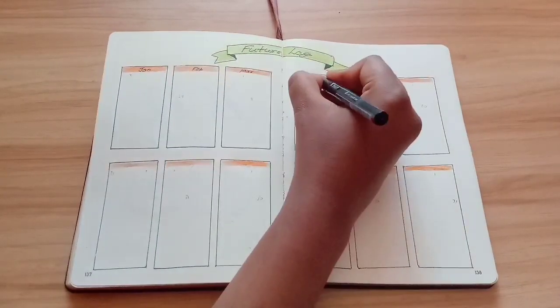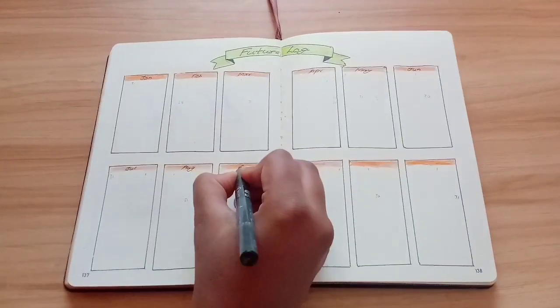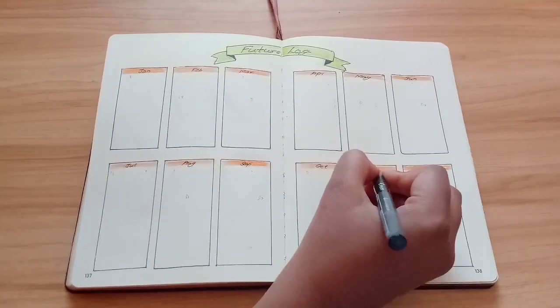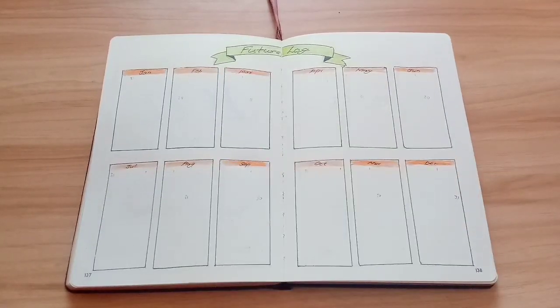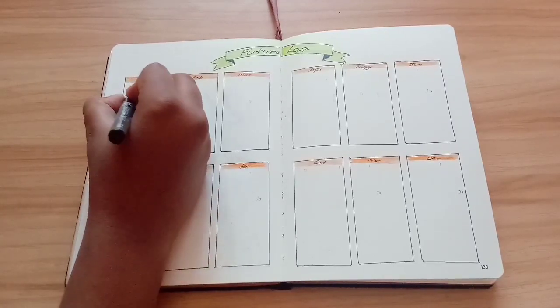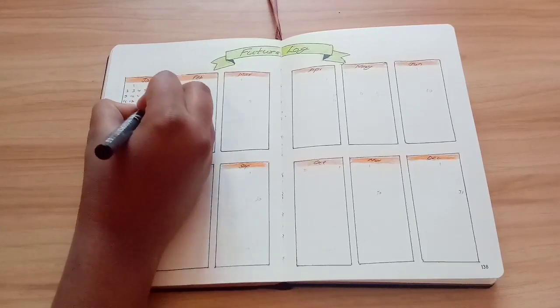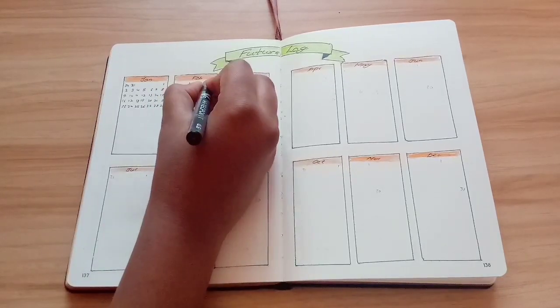Now I'm filling in the name and dates of the month. I use my future log as a place to write down important dates, fun events, my highs and lows to remember in the future. You can obviously use it your way.